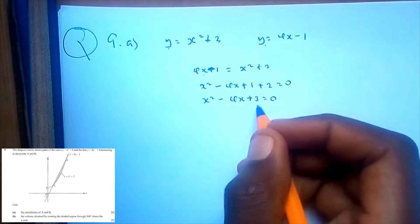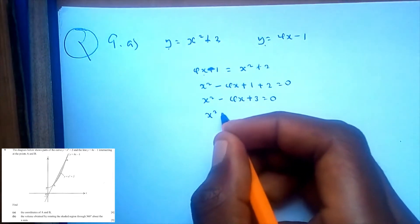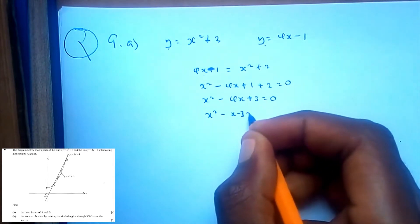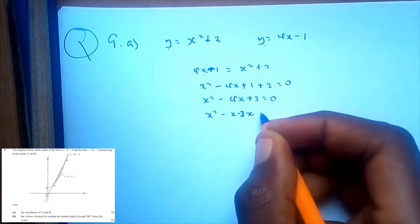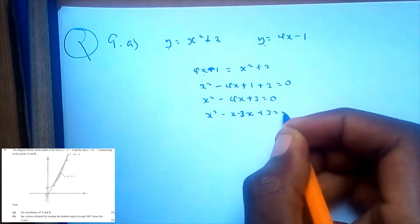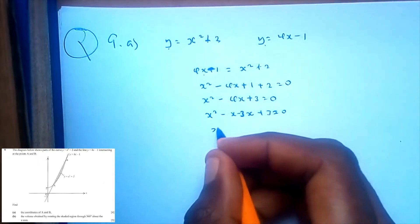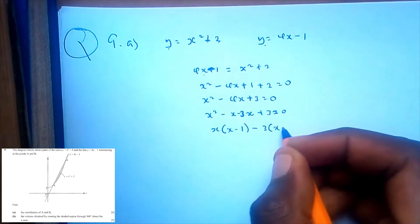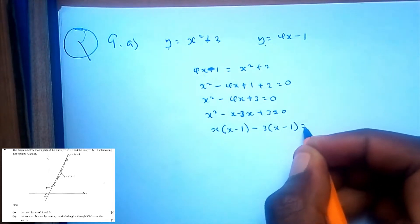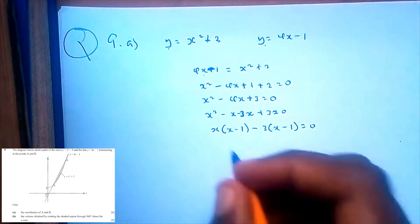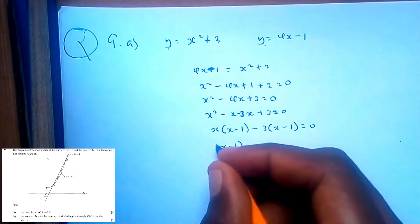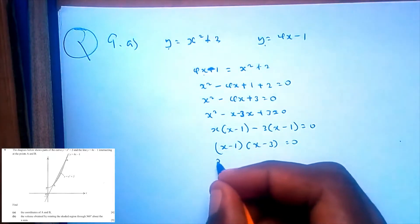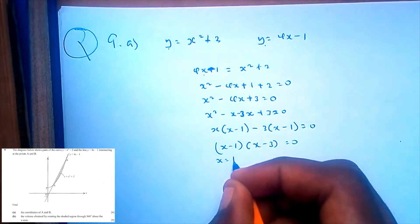That is negative 1 and negative 3. So x minus 1, times x minus 3, is equal to 0. So, x minus 1 equals 0 or x minus 3 equals 0. Therefore, x is equal to 1 or x is equal to 3.